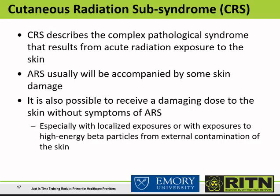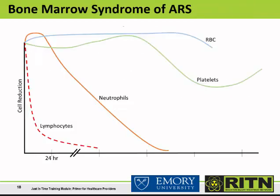ARS will also usually be accompanied by some skin damage. Cutaneous radiation syndrome, or CRS, describes the complex pathological syndrome resulting from acute radiation exposure to the skin. It is also possible to receive a damaging dose to the skin without symptoms of ARS, especially with localized exposures or exposures to beta particles from external contamination. ARS will manifest days to weeks after exposure: lymphocytes are very radiosensitive, so the absolute lymphocyte count rapidly decreases; the neutrophil count decreases as well after a brief rise, leading to neutropenia and susceptibility to infections; and red blood cell and platelet counts also decrease, making patients susceptible to bleeding. Recovery from HARS occurs when enough bone marrow stem cells survive the initial radiation insult.